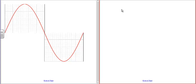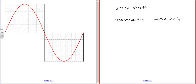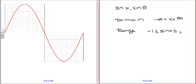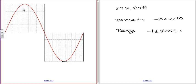The domain and range: for the sine of x or the sine of theta, the domain is all real numbers — from negative infinity to positive infinity, because this just keeps repeating. The range is fairly limited: the sine of x is going to be between negative 1 and positive 1. It just keeps oscillating. So that's the domain and range for the sine function.